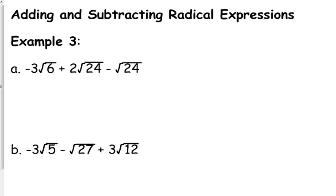What you need to look at these as, as almost like variables. When you see this problem, you should look at that as negative 3x plus 2y minus y. Square root of 6 is like x, square root of 24 is like y. You can't add x's and y's together.